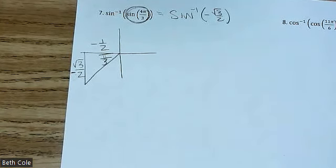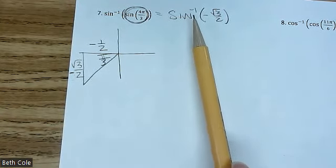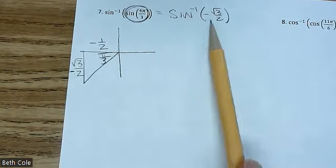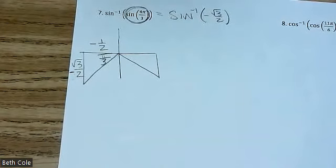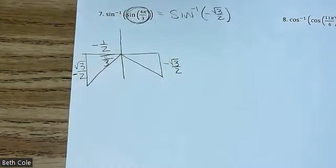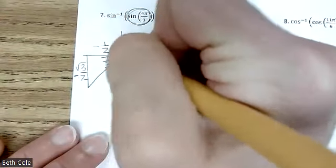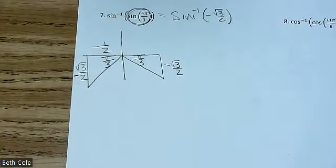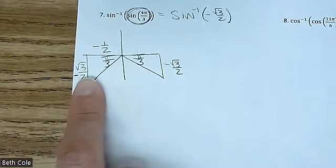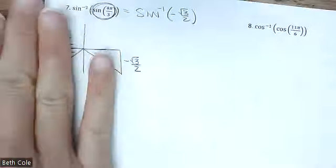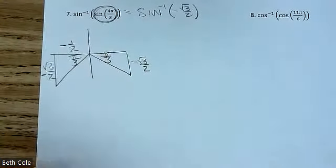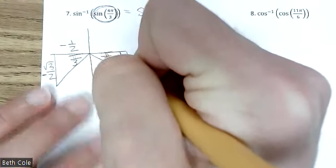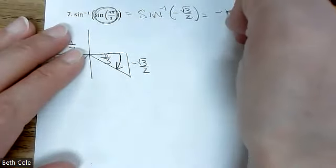So we end up with sine inverse of negative square root of three over two, and we do that exactly like we did the ones on the front. It's a two-step problem. Sine inverse can only be in quadrant one or quadrant four, and because this is negative, it has to be quadrant four. Sine is your y value, so negative square root of three over two goes there. Your angle is pi over three. That's the exact same triangle, just reflected over. Your amount of rotation to get there is negative pi over three.